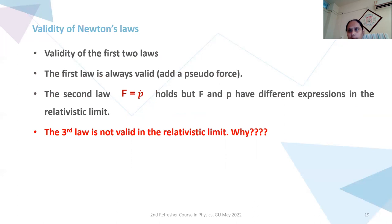Now we have these three laws and we need to say about validity. There is no problem with first and second law. That is, they remain valid. First law is always valid even if you add a Coulomb force. The second law, which is F is equal to P dot, holds, but something has to be kept in mind. That F and P have different expressions in relativistic frame. And the third law is not valid in relativistic frame. So we should know why third law is not valid in the relativistic frame.